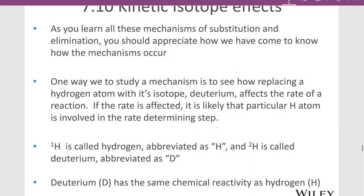Deuterium is an isotope of hydrogen that has a neutron in it, and because of that neutron, it will affect the rate of the reaction. It actually slows reactions down. If it's likely that a particular hydrogen is involved in the rate determining step, then it can be replaced with deuterium, and that reaction rate can be studied.